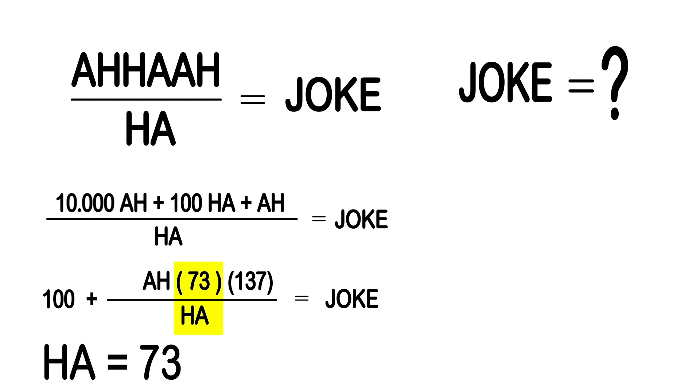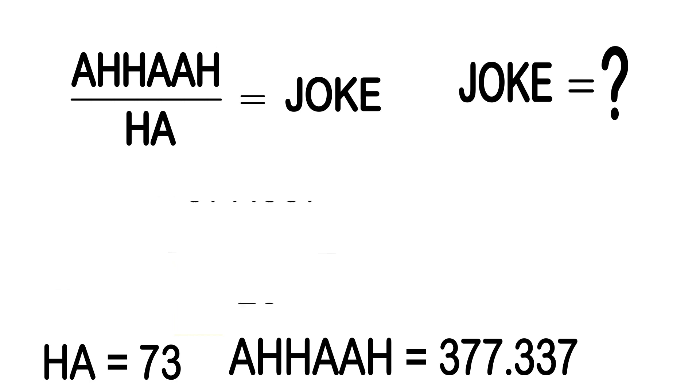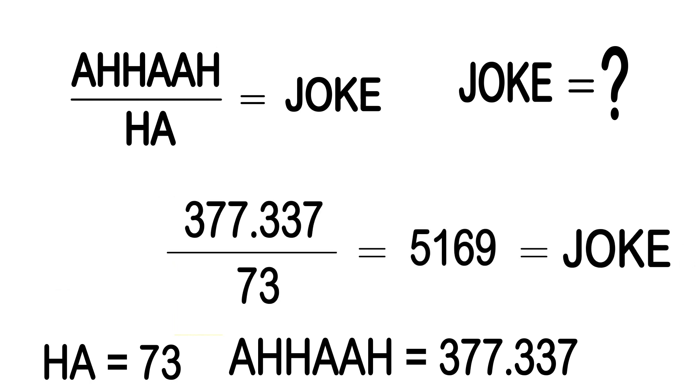From this we can solve for the unknown value of the numerator and the denominator of the shown fraction. Then as we divide numerator by denominator, joke will be equal to 5169.